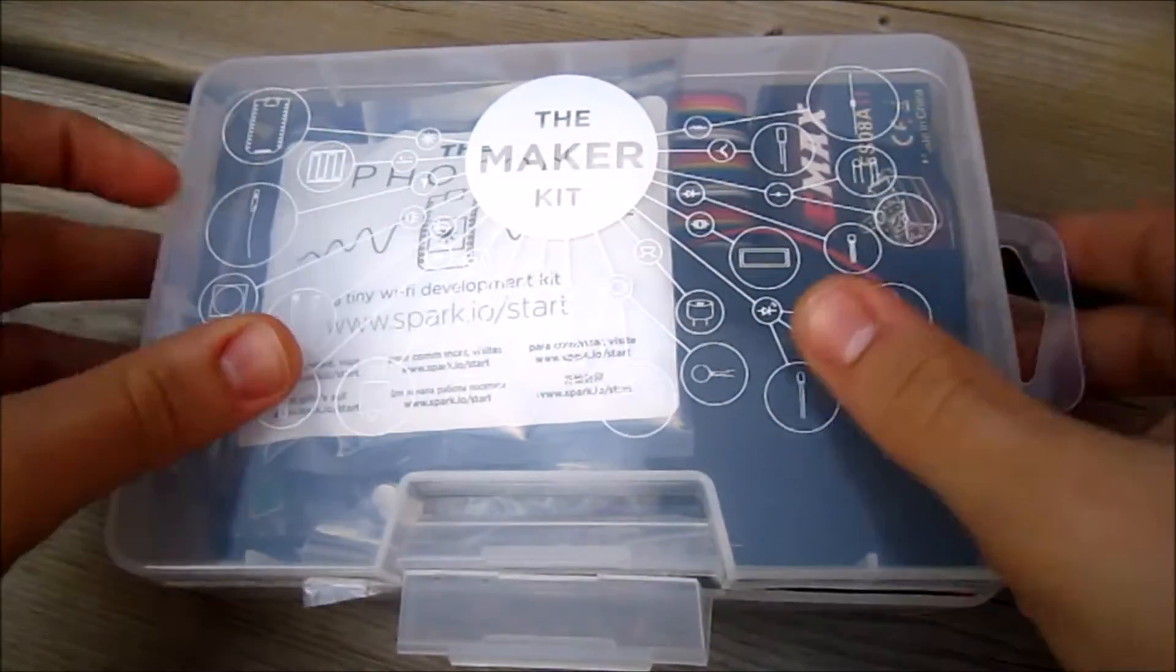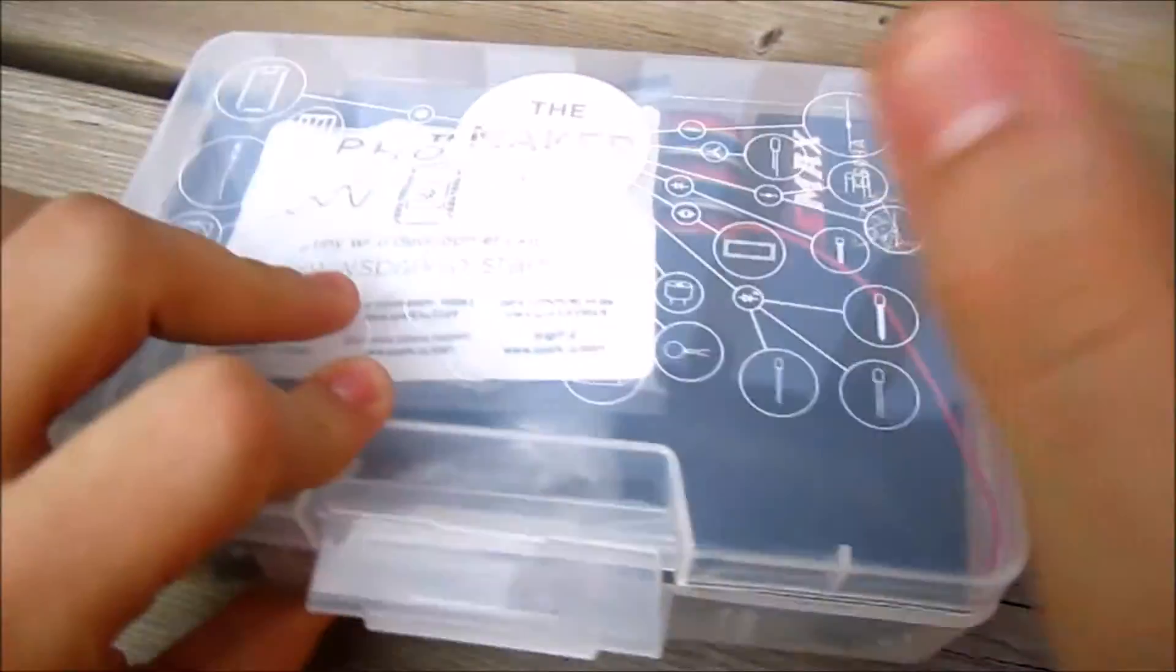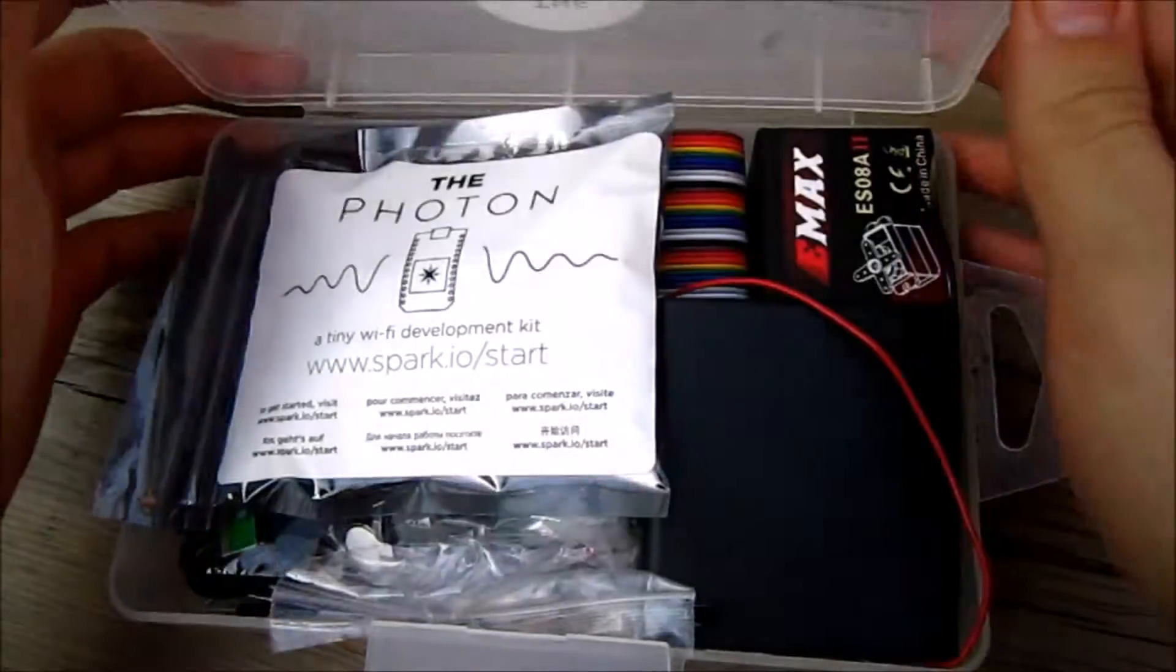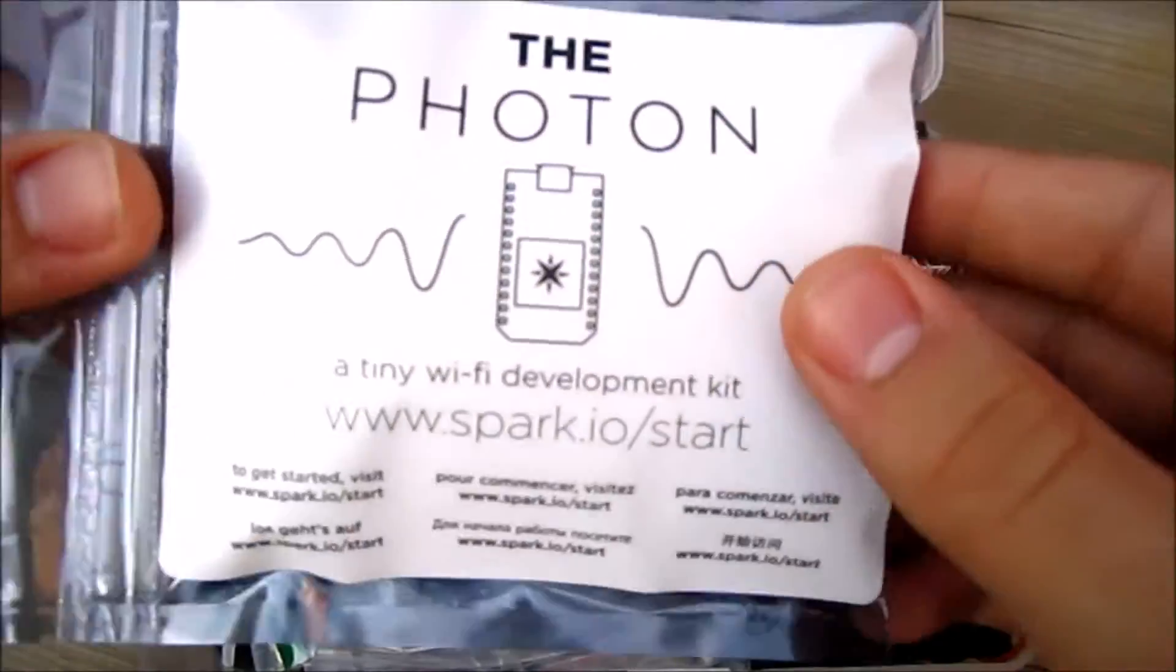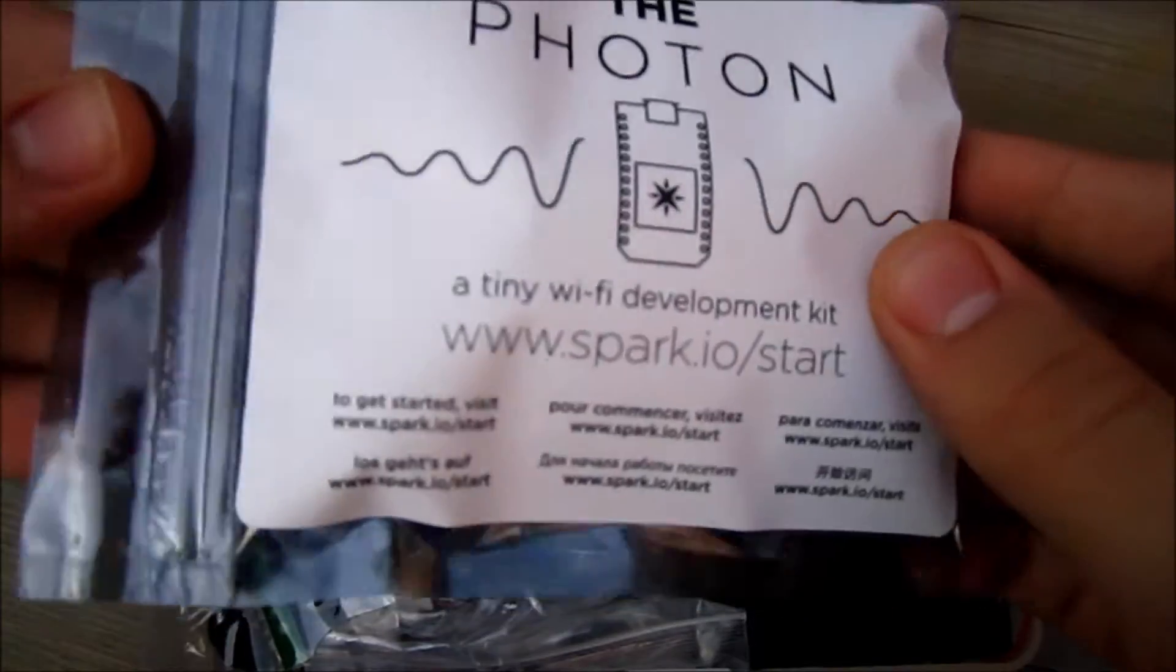You can see it comes in this nice plastic carrying case. It's a hard shell plastic and the first thing we see is the Photon itself. I think it's mounted to a breadboard right now, so we're just going to open it up first and take it out.